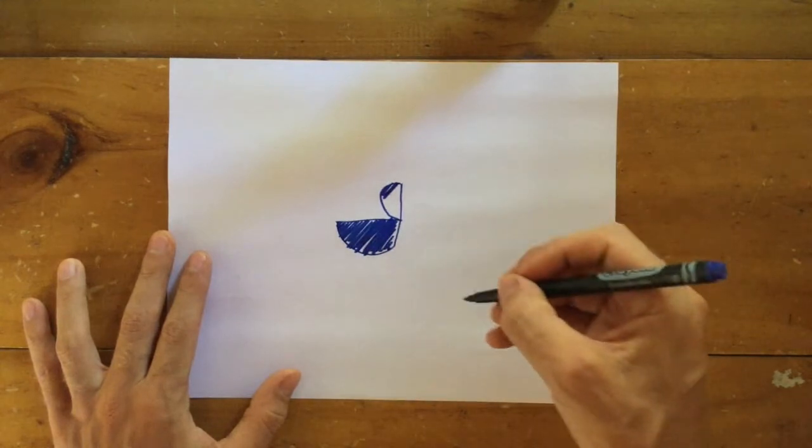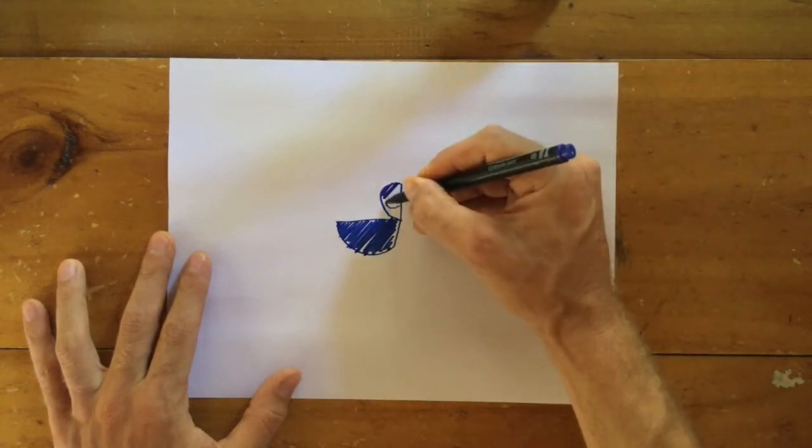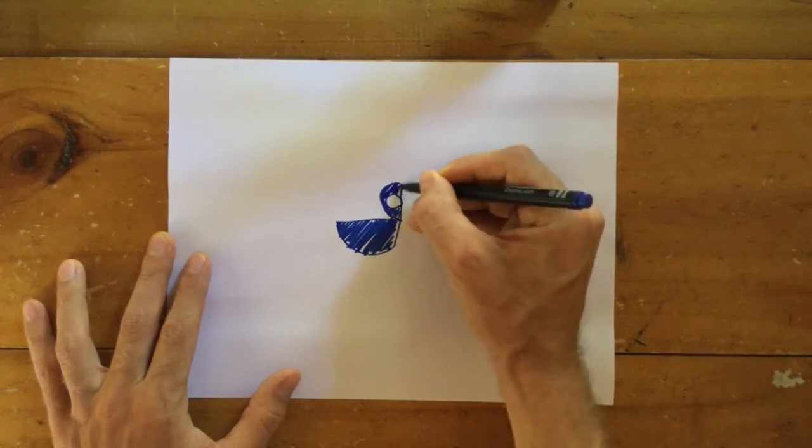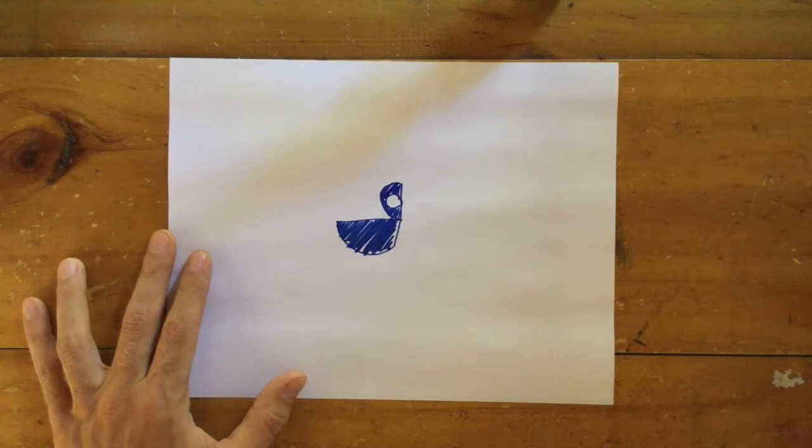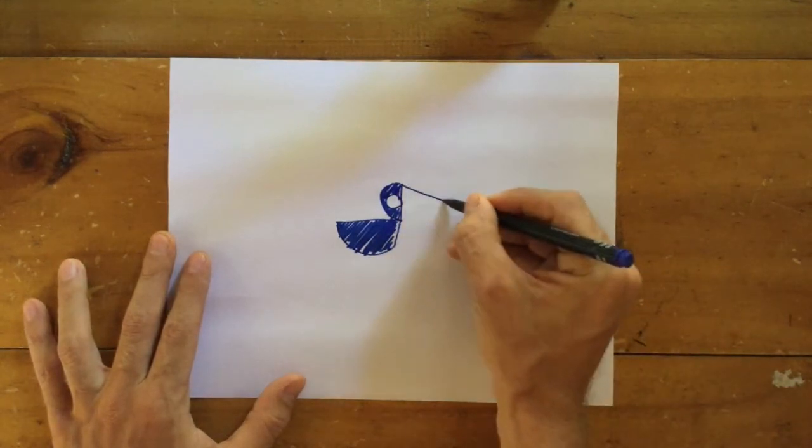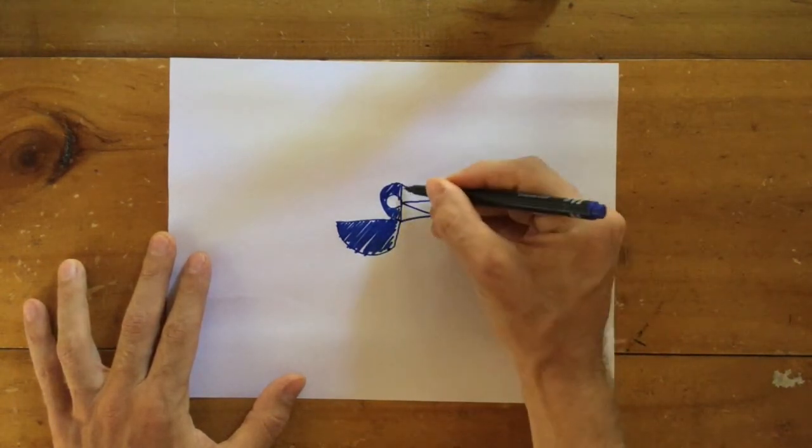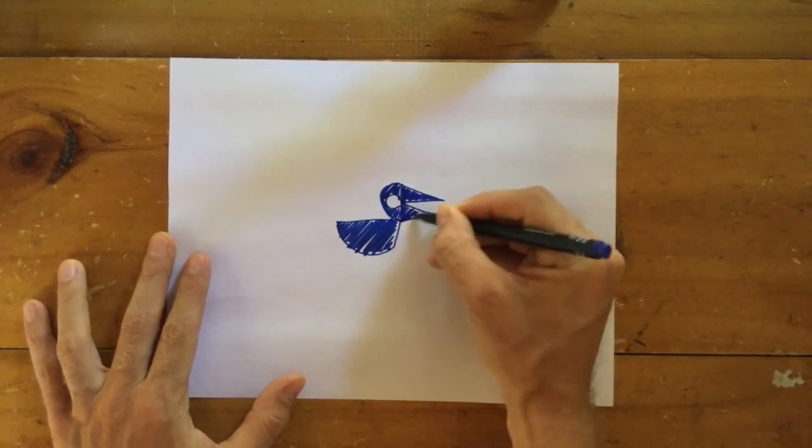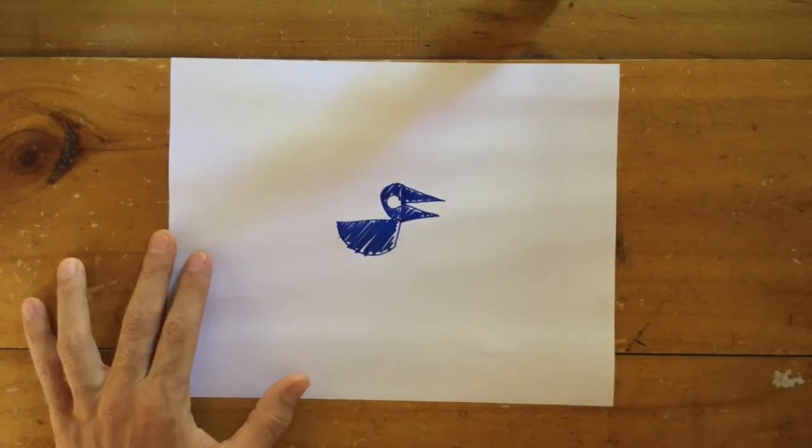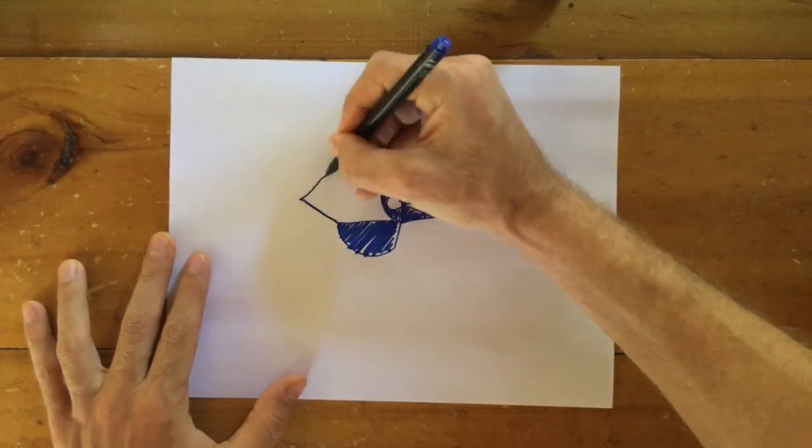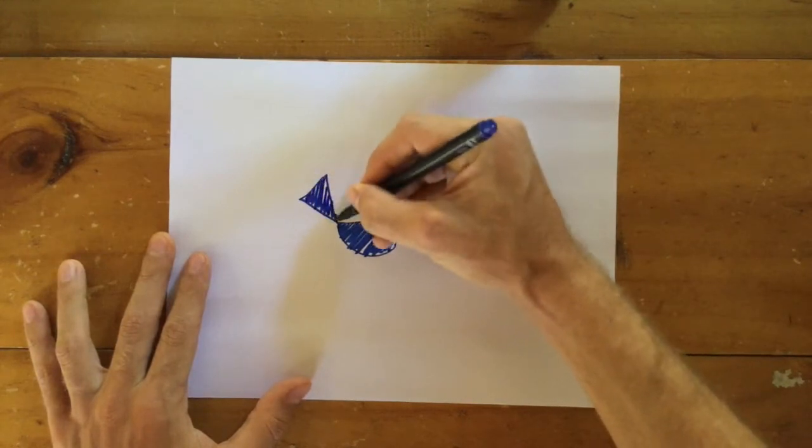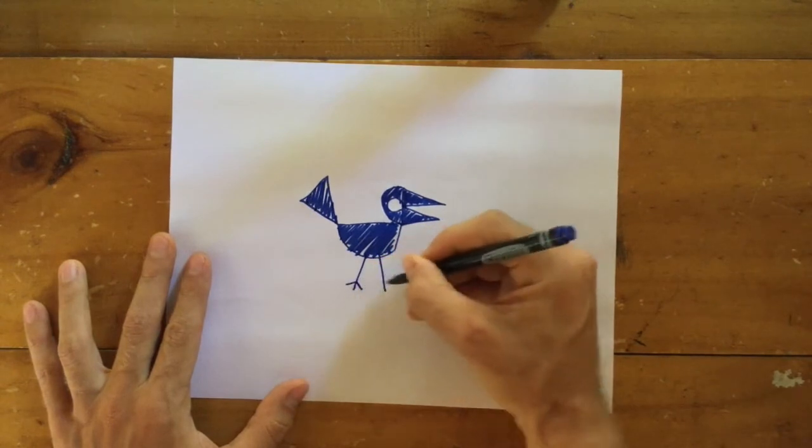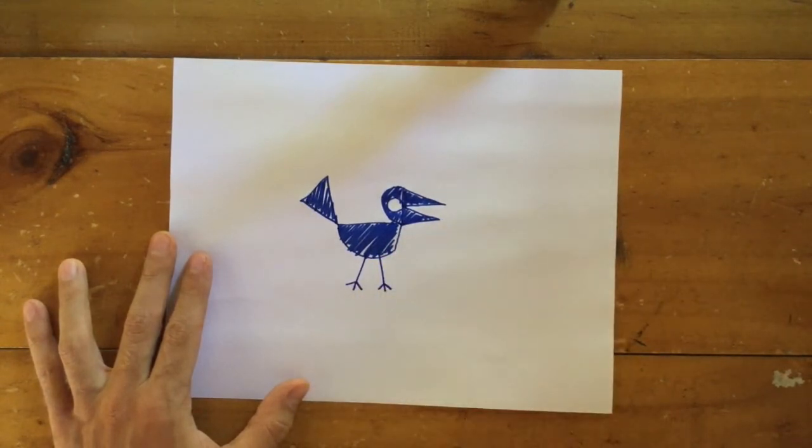Oh, I almost made a mistake. We add a circle just here. I was trying to go too fast. And now we've put triangles. Can you see what it's going to be? Can you tell what it is yet? And another triangle here for the tail of course. I'm sure you can see now. And it needs some stick legs.